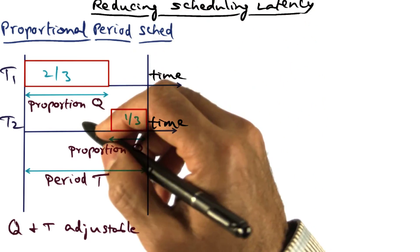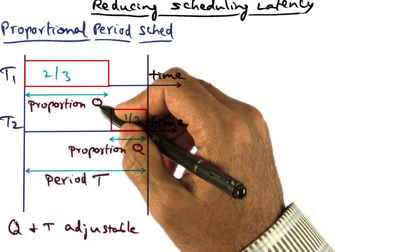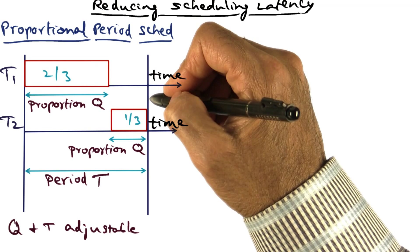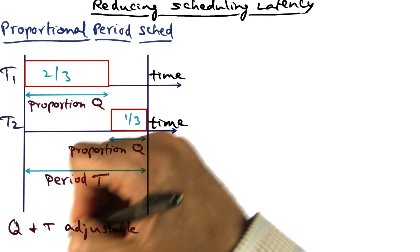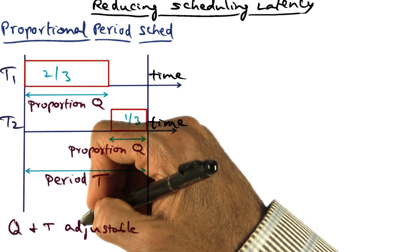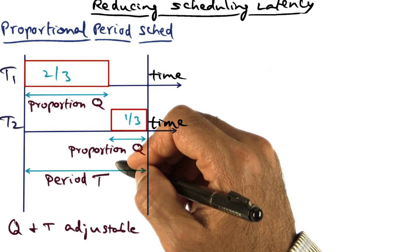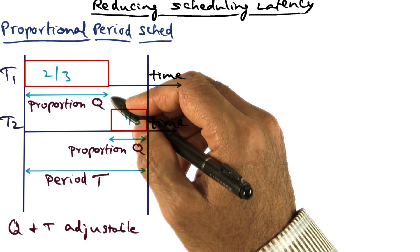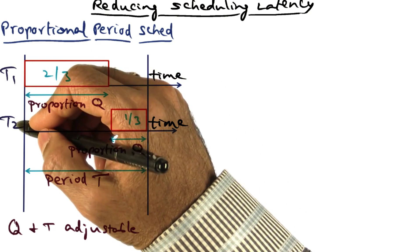So that's the idea behind proportional period scheduling. It provides temporal protection by allocating each task its requested proportion. And both these Q and T parameters are adjustable using a feedback control mechanism. And so this improves the accuracy of scheduling analysis that you can do on behalf of processes that are time-sensitive.